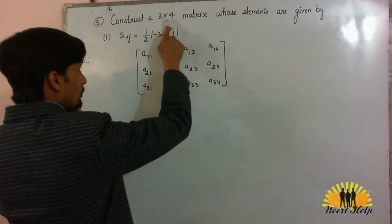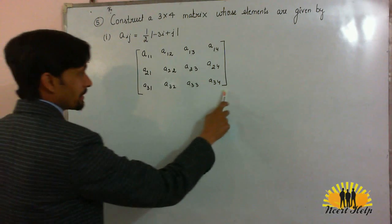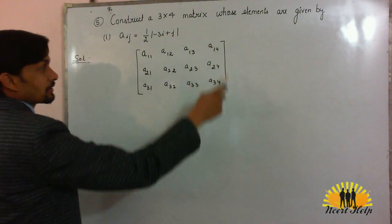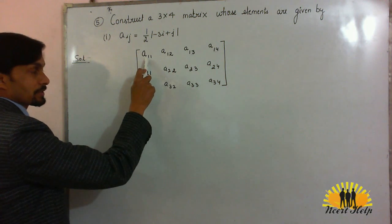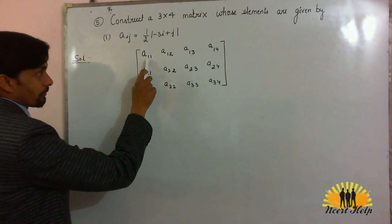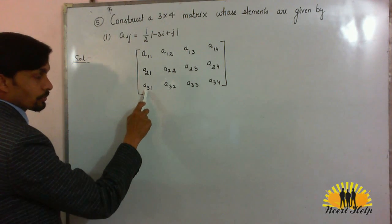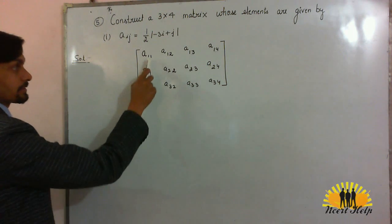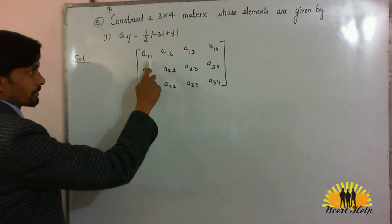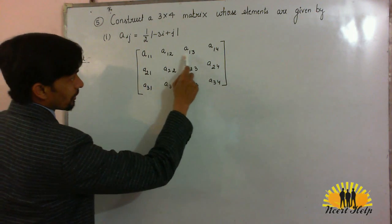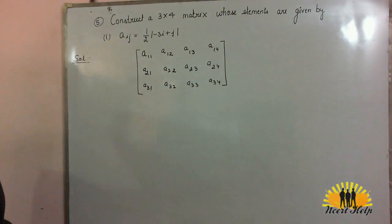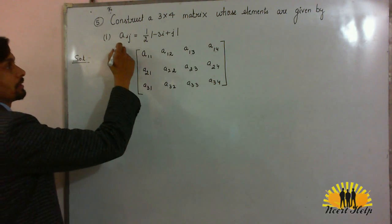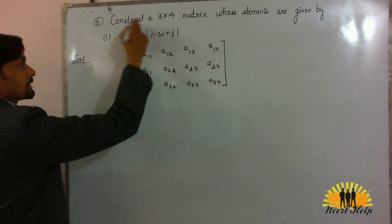According to a 3×4 matrix, we have 12 elements, where the first number represents the row number. So we have first row, second row, third row, and the second number represents the column number: first column, second column, third column, and fourth column. Now we will calculate the values of these elements by putting them into this formula.